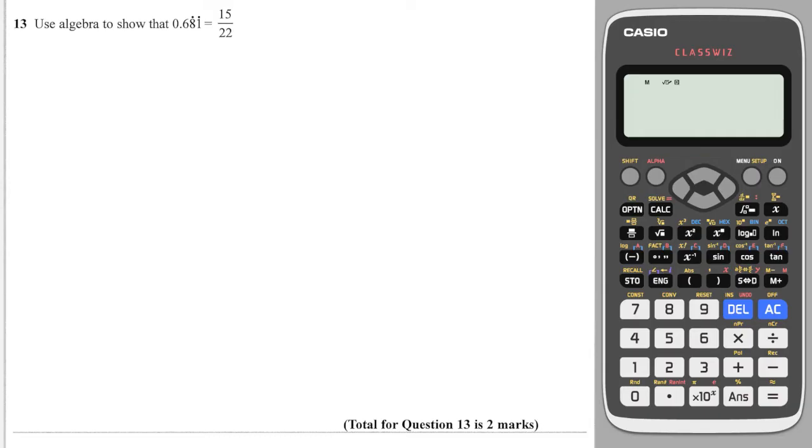OK, the first thing you do, and these questions are so formulaic, it's unreal. You write X is equal to this recurring decimal 0.6818181, so it's the 81 which keeps recurring. And because there are two digits which are reoccurring, I'm going to multiply by 100, which is one with two zeros.